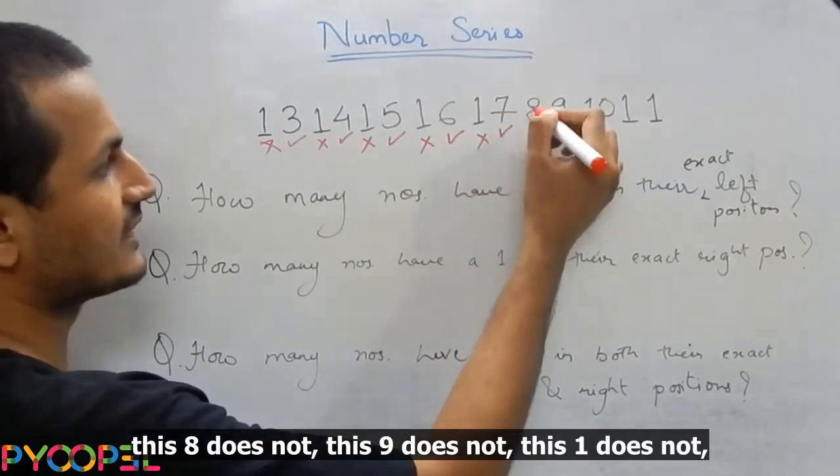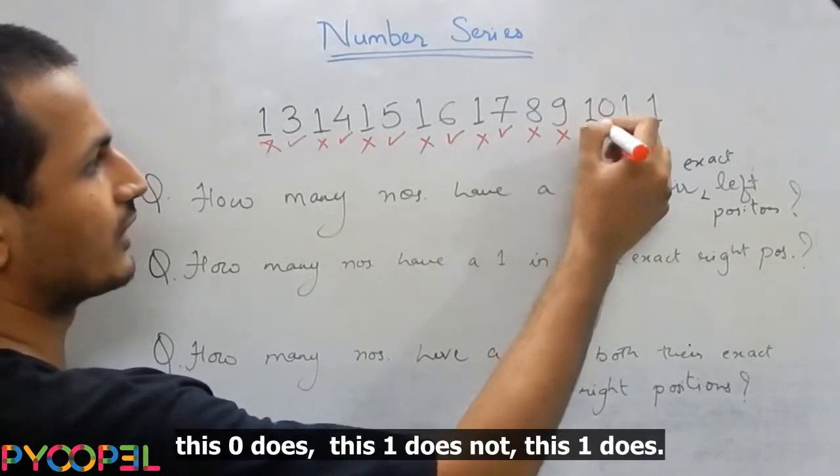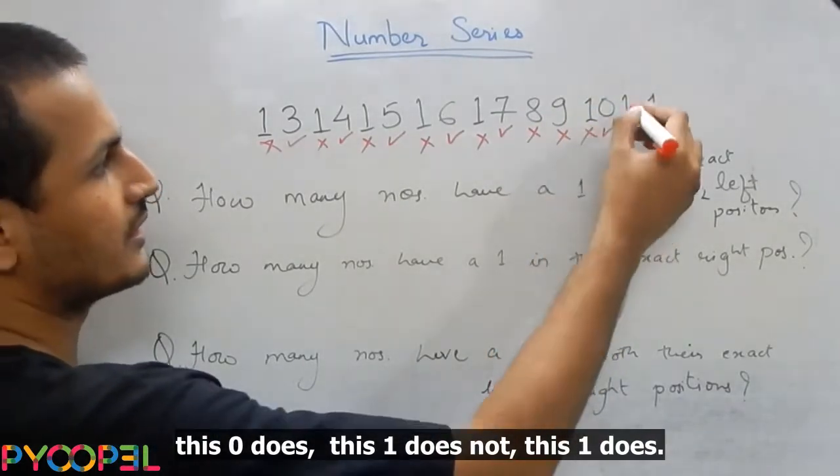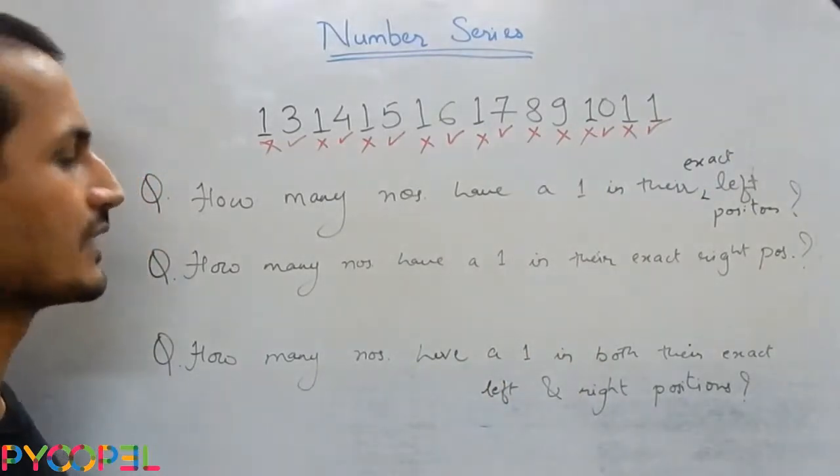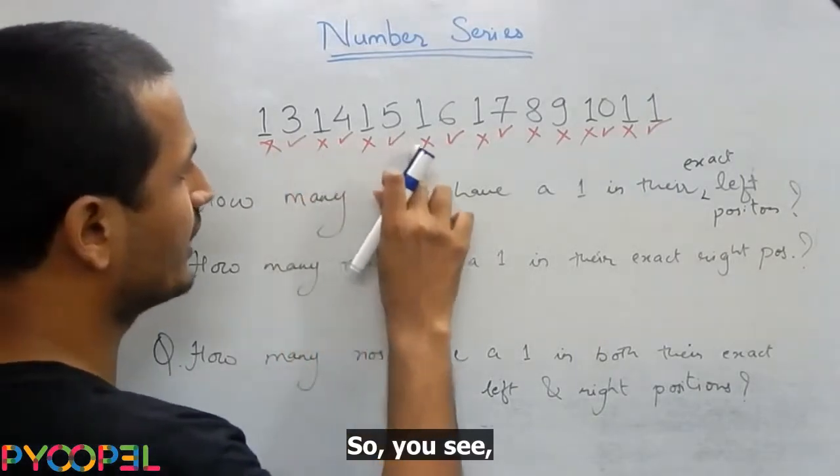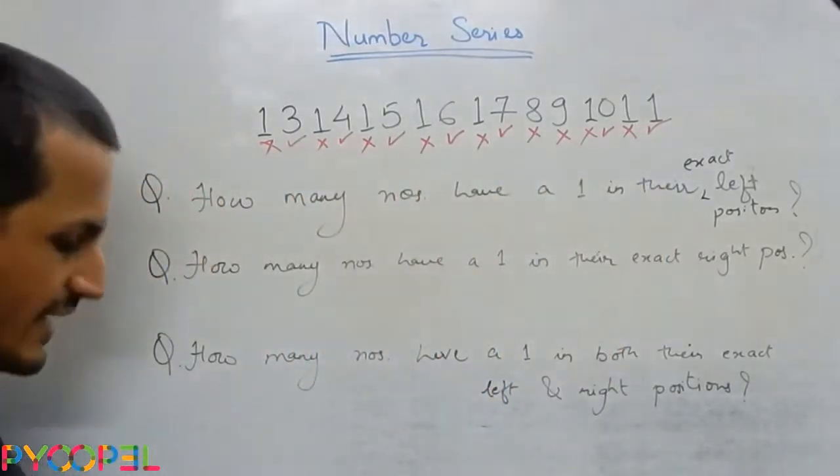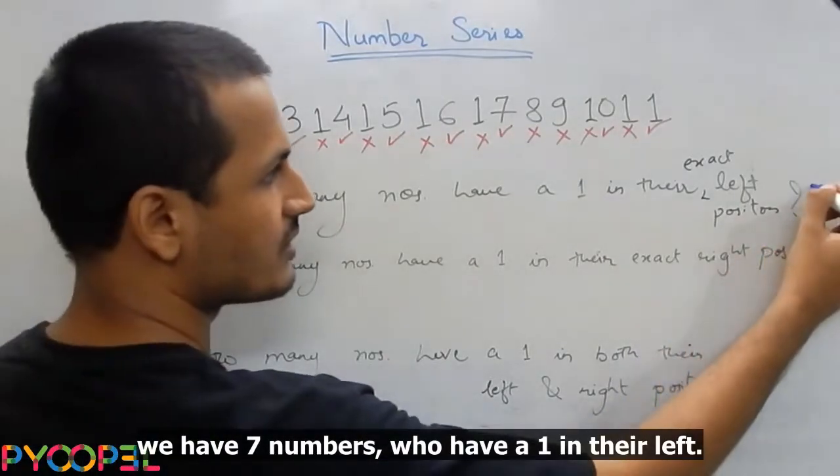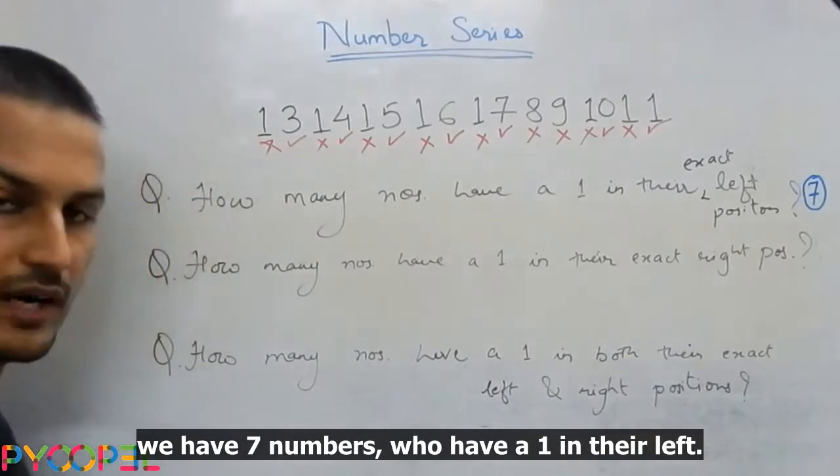This 1 does not. This 7 does. This 8 does not. This 9 does not. This 1 does not. This 0 does. This 1 does not. This 1 does. So you see, one, two, three, four, five, six, and seven. So we have seven numbers that have a 1 in their left.